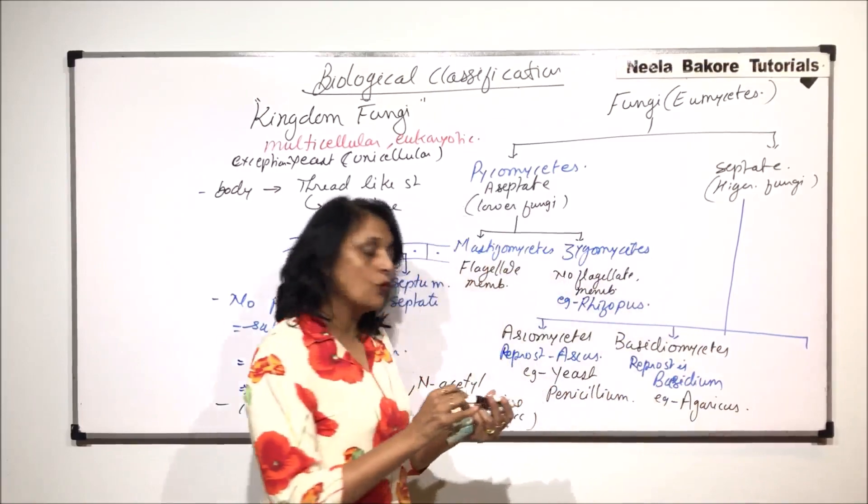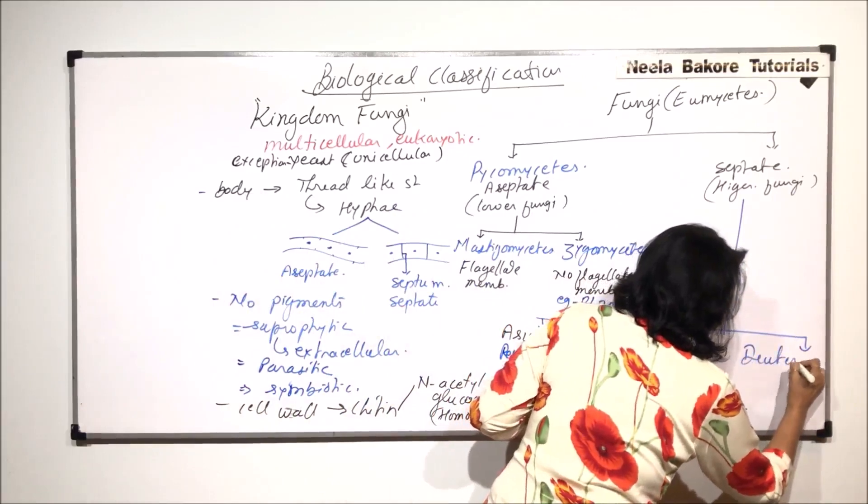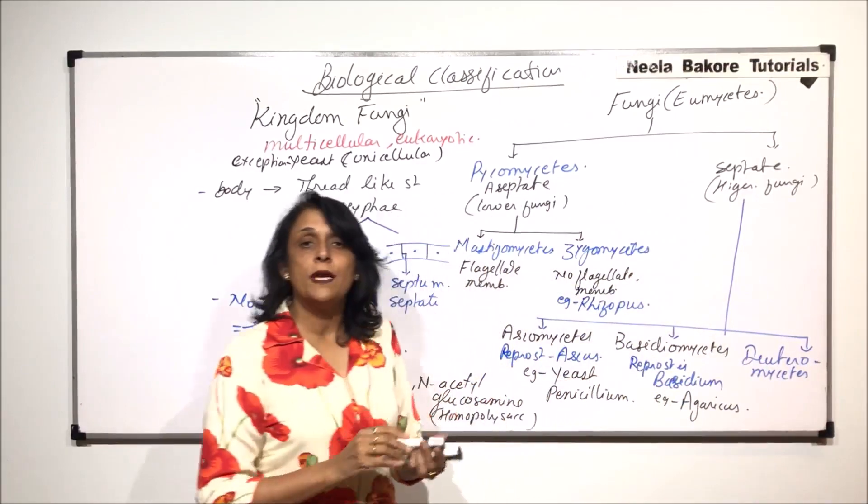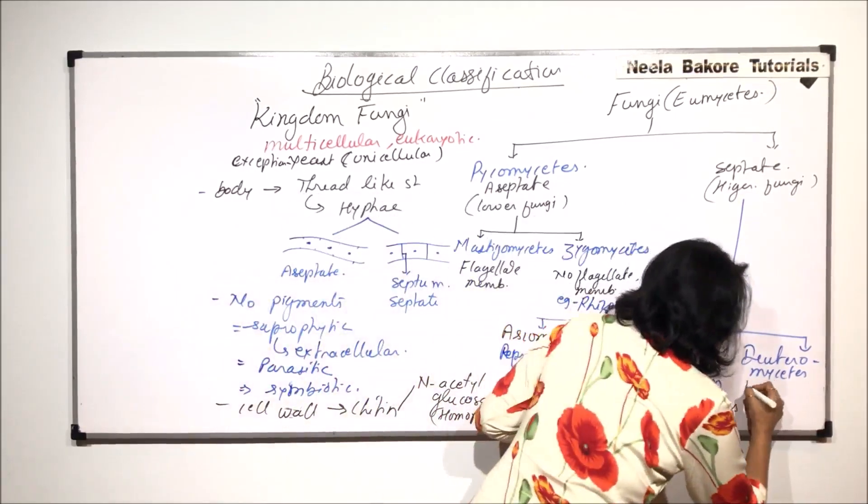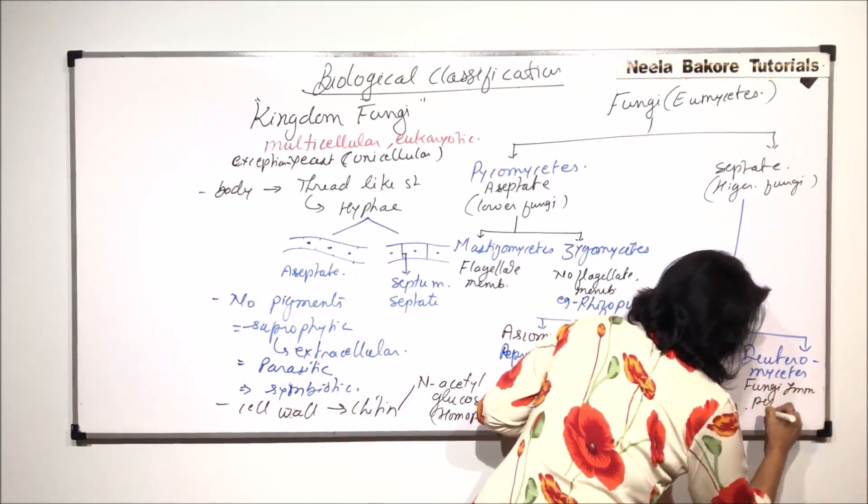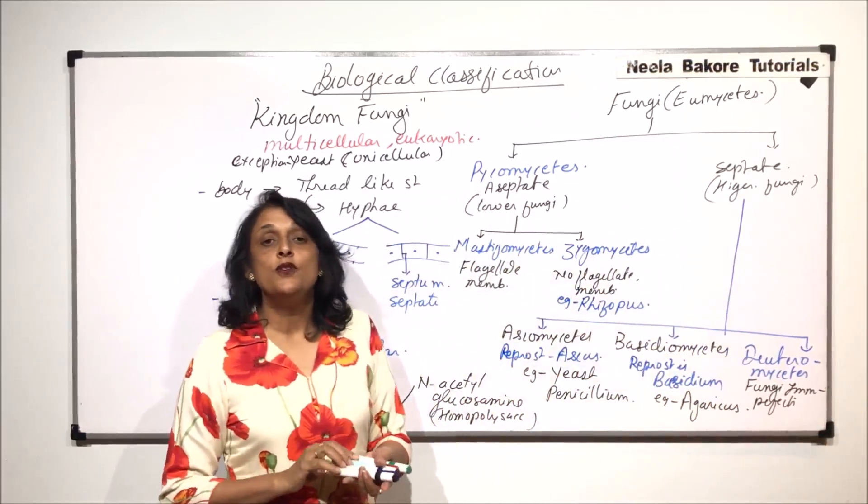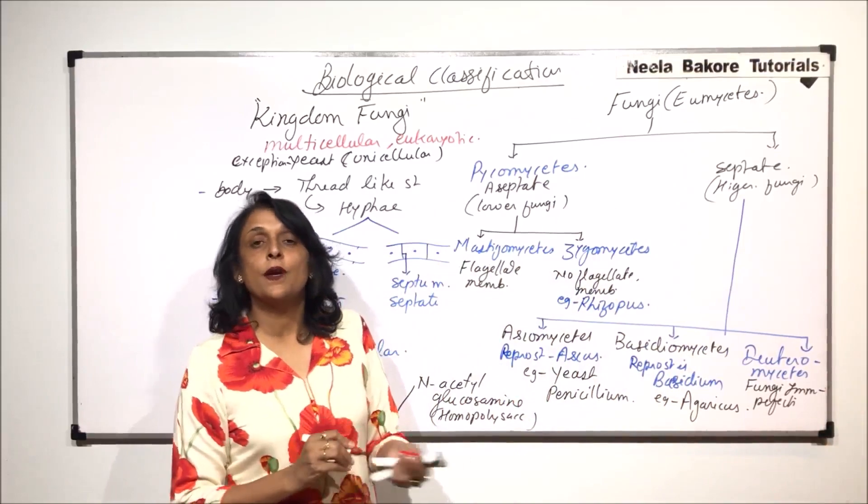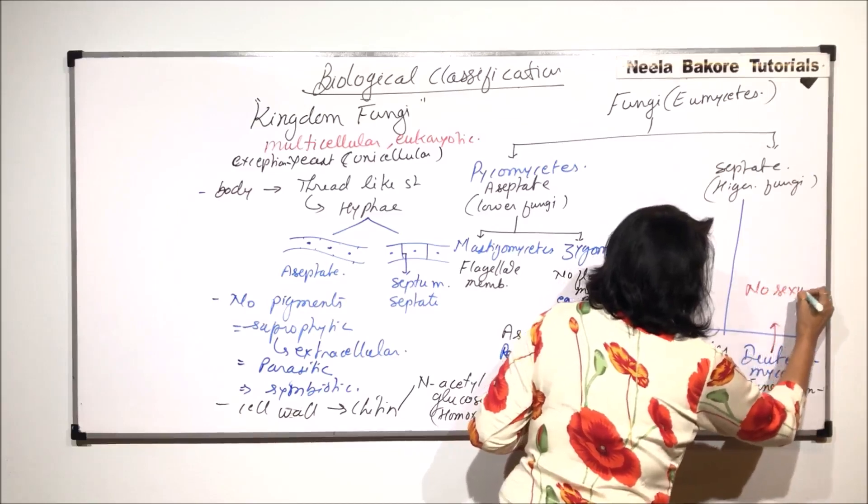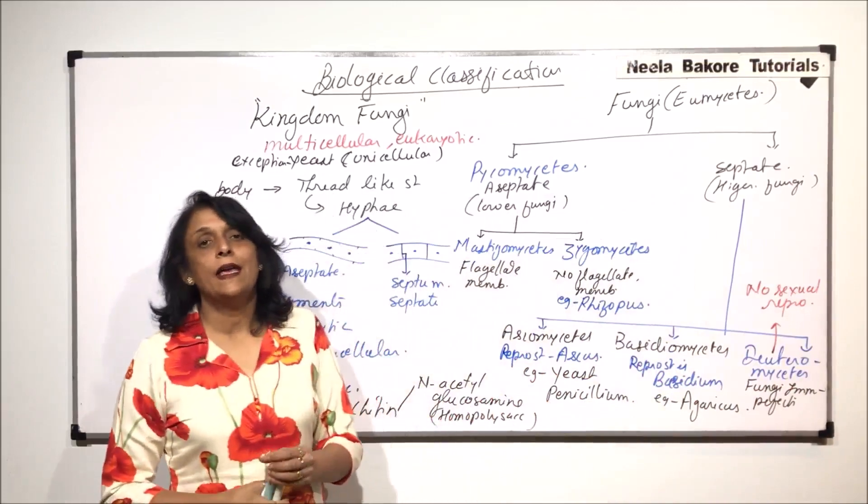And the third group is known as deuteromycetes. And deuteromycetes group is known as fungi imperfecti. And the reason why they are called fungi imperfecti is that there is no sexual reproduction in this group. In this group, deuteromycetes, there is no sexual reproduction. And that's why they are called fungi imperfecti.